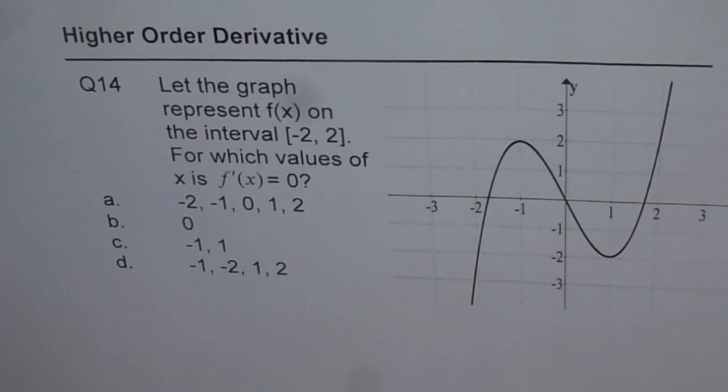The options are: A) -2, -1, 0, 1, 2; B) 0; C) -1, 1; and D) -1, -2, 1, 2.